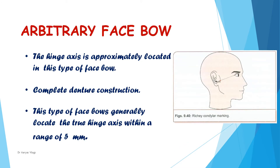Coming to the first type, that is arbitrary facebow — the most commonly used facebow in complete denture construction. It is said to be arbitrary because the hinge axis is approximately located in this type. It is also called as average axis facebow, and this type generally locates the true hinge axis within a range of 5 mm.